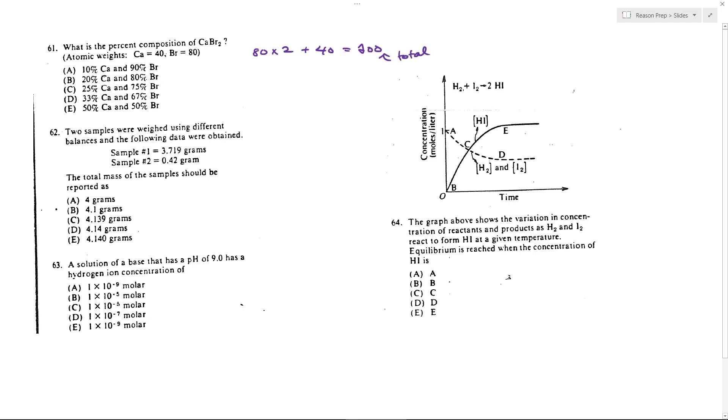Now we'll find the percents of each. So calcium is going to be 40 out of 200, which is the same thing as 1 fifth. That's 20%. So we're done. If you want to check, you could also do 160 out of 200, which would also get you 80%. Br, this is the Ca. Either way, we get choice B.